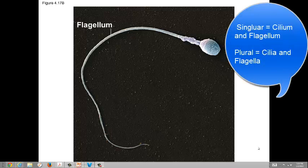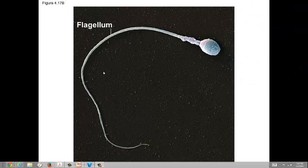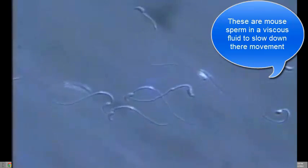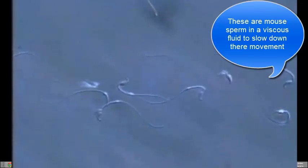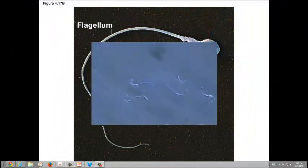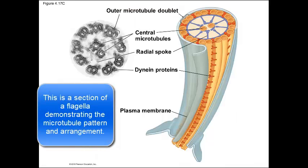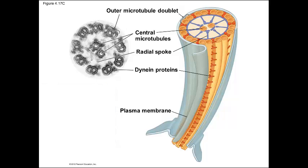Flagella are the next structures. This is a flagellum on a sperm cell — flagellum is singular, flagella is plural — and the flagellum is going to be longer than cilia. These structures propel a cell by undulating in a whip-like motion. Many single-cell organisms use flagella to propel themselves, as seen in the first video. Although there are differences between flagella and cilia, they actually have a common structure based upon the arrangement of microtubules in a very specific pattern. Let's use the following animation to dig deeper into the similar structures of cilia and flagella and how they are motorized to move.